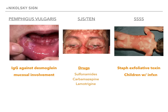Pemphigus vulgaris is caused by IgG against desmoglein, and you'll commonly see mucosal involvement. If you have a positive Nikolsky sign with a really nasty rash and involvement of the oral cavity, it's pemphigus vulgaris. Stevens-Johnson syndrome slash toxic epidermal necrolysis is associated classically with drugs — sulfonamides, carbamazepine, lamotrigine, occasionally cephalosporins or penicillins. For staphylococcal scalded skin syndrome, look for a younger patient with a recent infection who then develops a terrible rash — that's SSSS, caused by the staphylococcus exfoliative toxin.